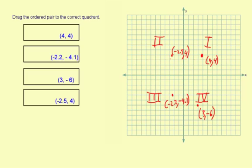Now that the points are plotted, we can easily see which quadrants they belong in. 4, 4 is in quadrant 1. Negative 2.2, negative 4.1. That's in quadrant 3. It's down here.